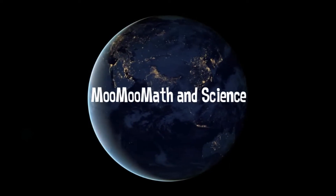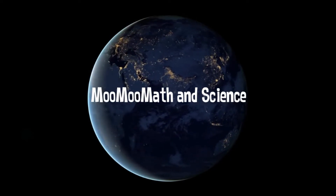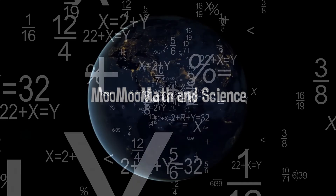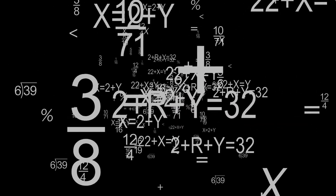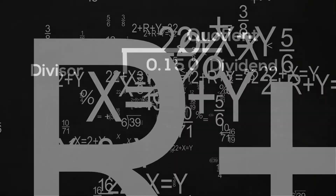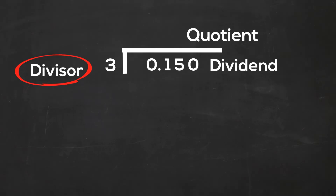Welcome to Moo Moo Math and Science. In this video, let's learn how to divide decimals by a whole number. Because the divisor is a whole number, we don't have to worry about the decimal. What we can do is just move the decimal point from the dividend straight up, and then we can divide like a regular problem.